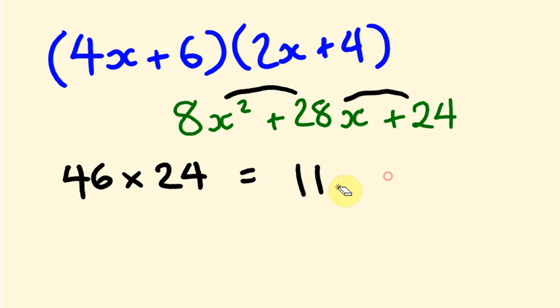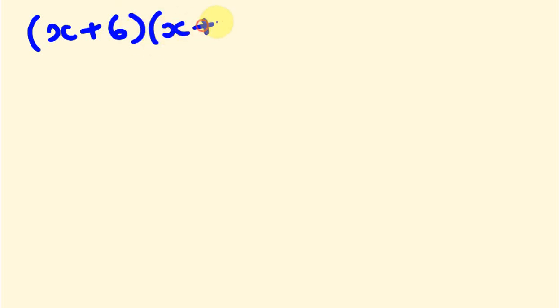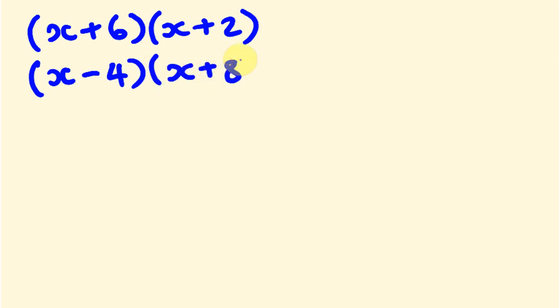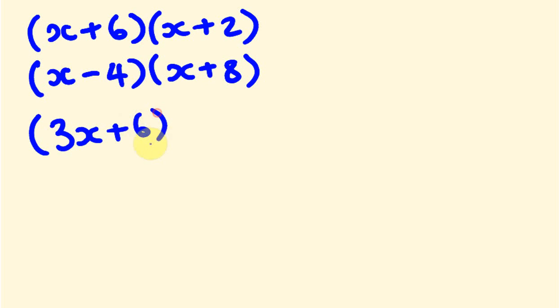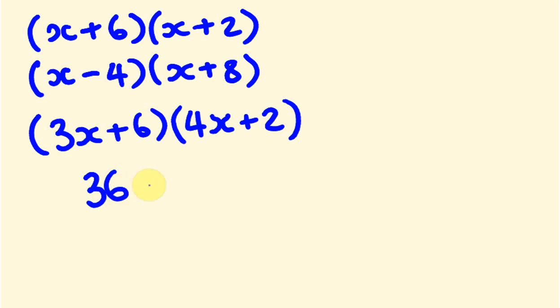I'm going to give you a bunch of these to do by yourself, really quickly. I'll work through the answers with you, but get you to pause and give it everything you've got. So what about we try: first, x plus 6 times x plus 2. Give that one a go. Next, I'll put a negative in — x minus 4, so be careful, times x plus 8. Then another one: 3x plus 6 times 4x plus 2. And then, you might see where this is going — try 36 times 42. Pause the video and see how you go.